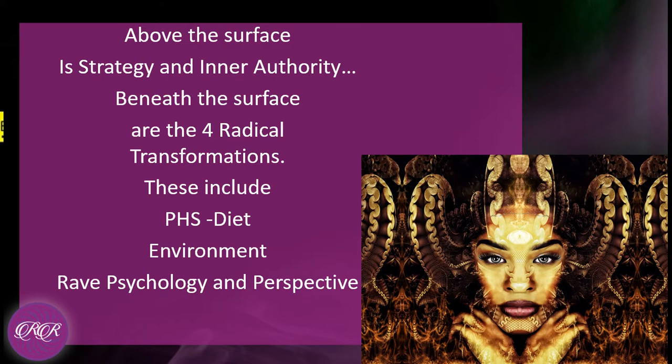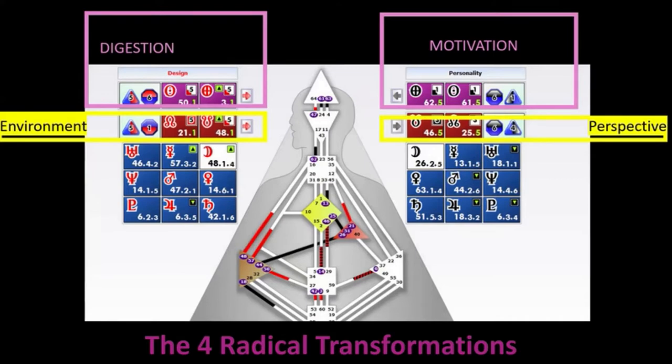In human design there is above the surface which is your strategy and inner authority and then there's below or beneath the surface which are the four radical transformations.